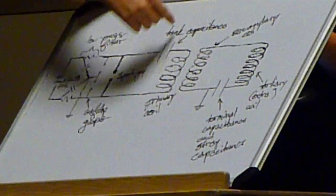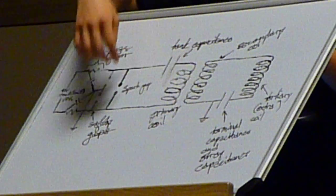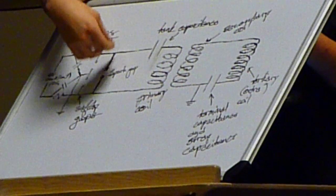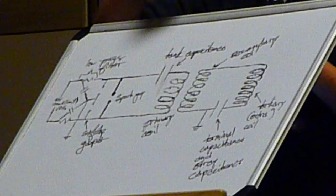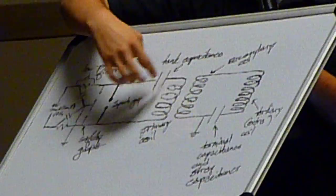It goes through the spark gap and charges the capacitor bank through the primary coil. When that capacitor bank gets to a high enough voltage, it'll break down across the spark gap, ionize the air, and create a plasma that will allow the capacitor bank to discharge through the primary coil.